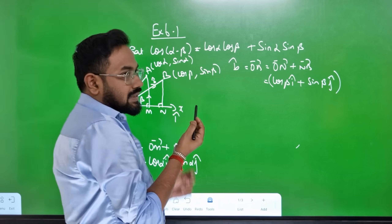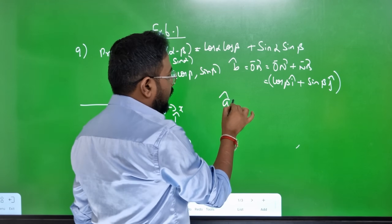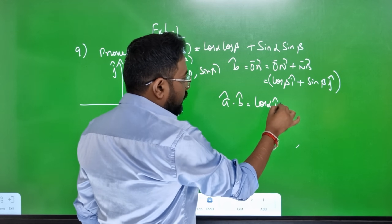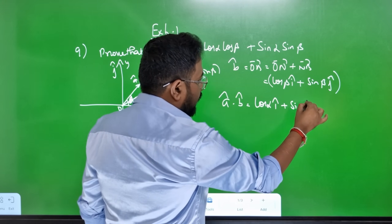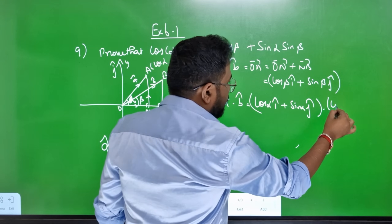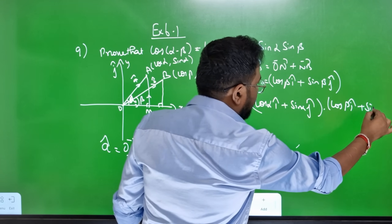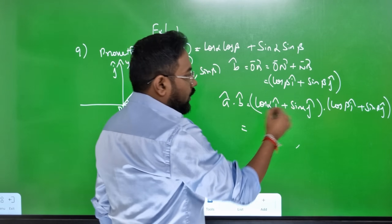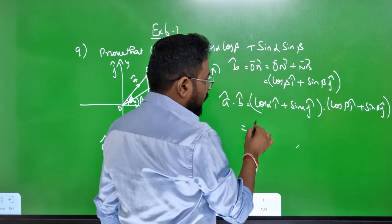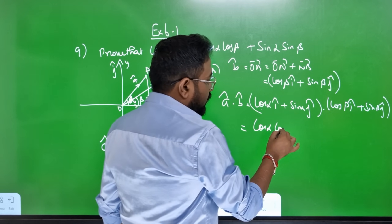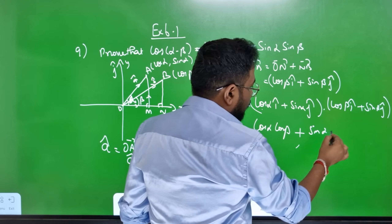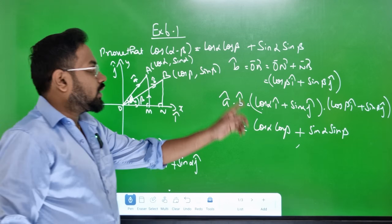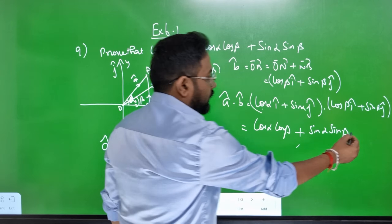Cos dot product, sin cross product — this is the 11th standard dot product. A-cap dot b-cap: then (cos alpha i-cap + sin alpha j-cap) dot (cos beta i-cap + sin beta j-cap). If we expand this, we get cos alpha·cos beta plus sin alpha·sin beta. This is the first equation.